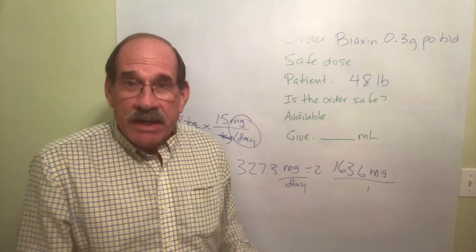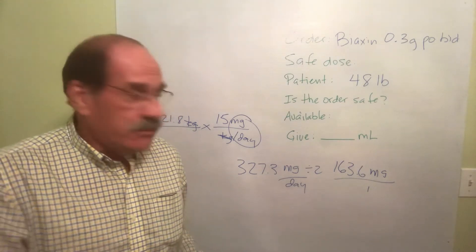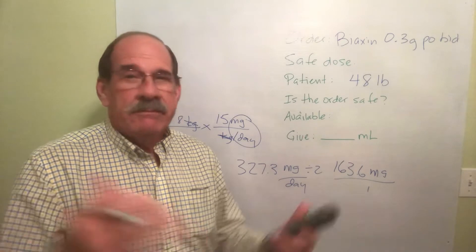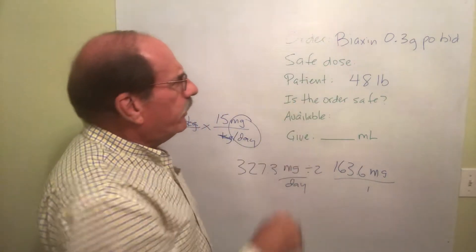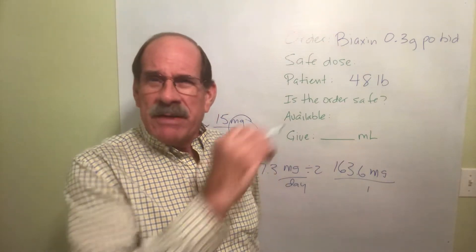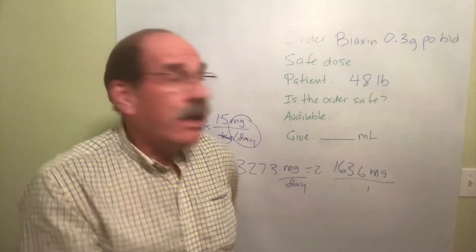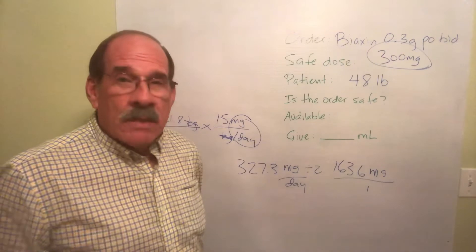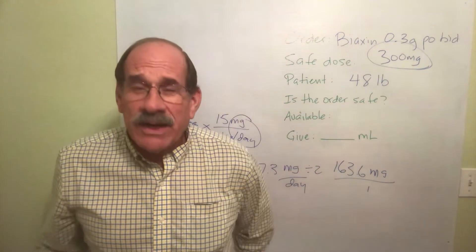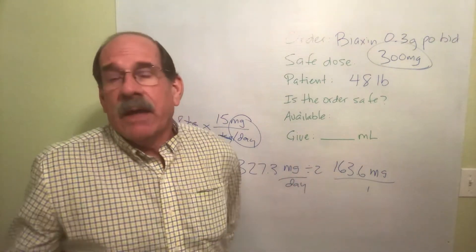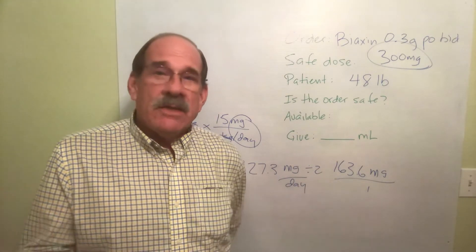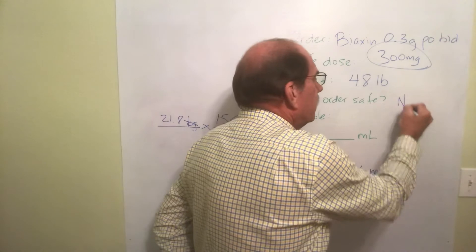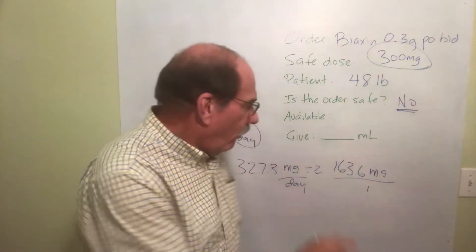Each time I give my patient the medicine, a safe dose is 163.6 mg. What did the doctor — or PA, or NP, or whoever prescribed this — say to give? Well, 0.3 grams. How many milligrams is that? That's 300 milligrams. Is that safe? No. That's an overdose — almost twice too much. Is the order safe? No. It is not safe. It is way over what a safe amount is.